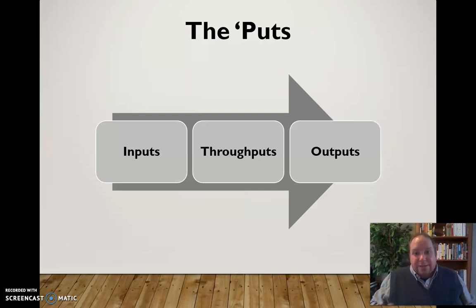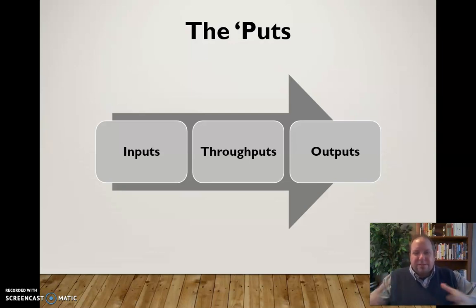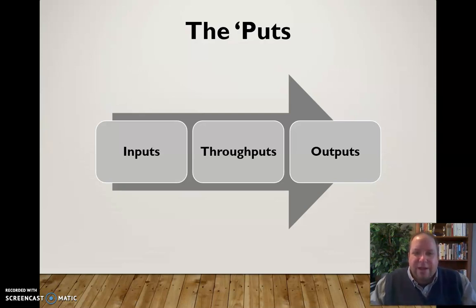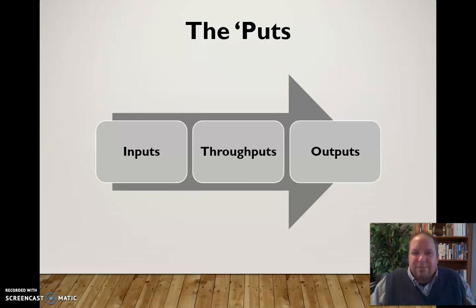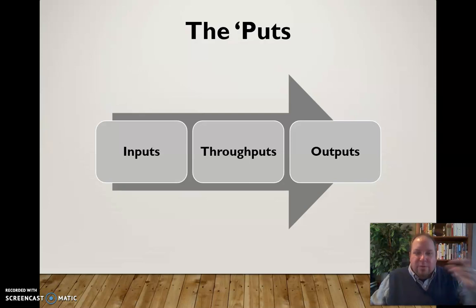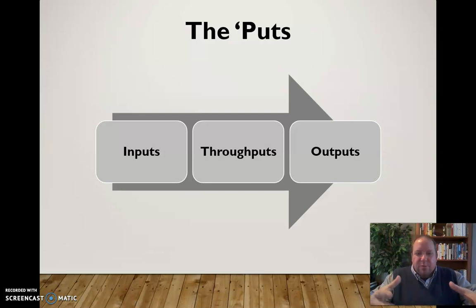Then eventually the group will ideally have outputs. We take the inputs, process them through the throughputs, and the end product is called the output — whether that's a report, a suggestion, or something physical. If you're a Habitat for Humanity group building a house, the output is the house. Whatever it is, the output is what the group produces.